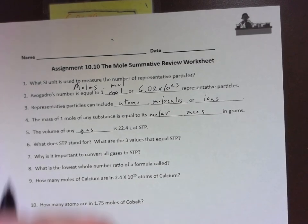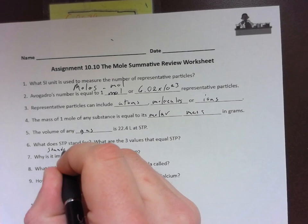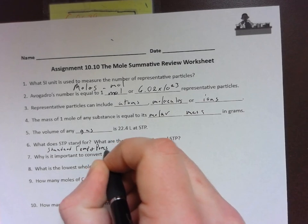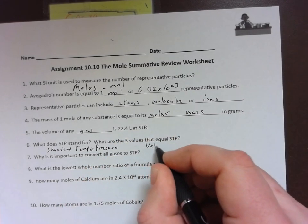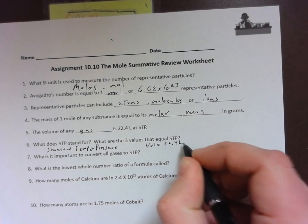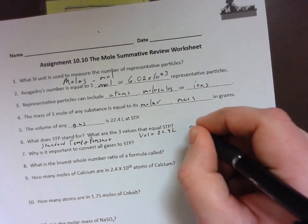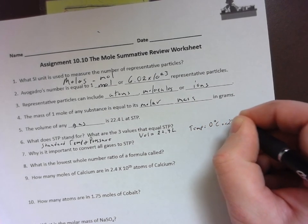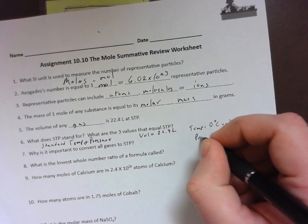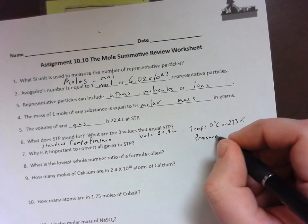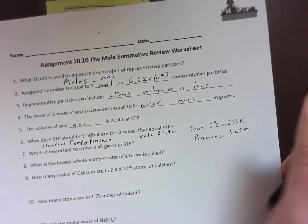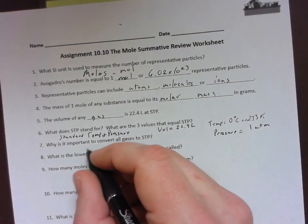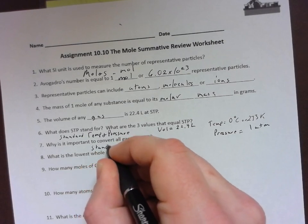STP stands for standard temperature and pressure, meaning that our volume is equal to 22.4 liters and our temperature is equal to zero degrees Celsius or 273 Kelvin, and then pressure is equal to 1 ATM or one atmosphere. It's important to convert all gases to STP so we know to have that standard volume.